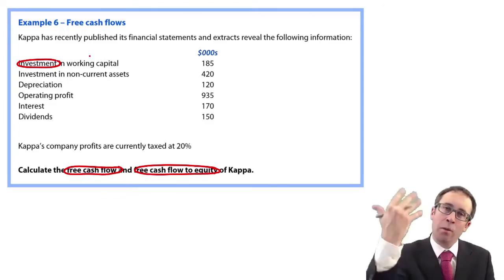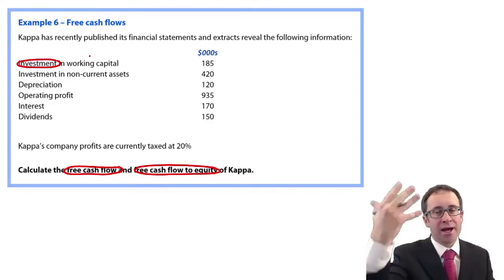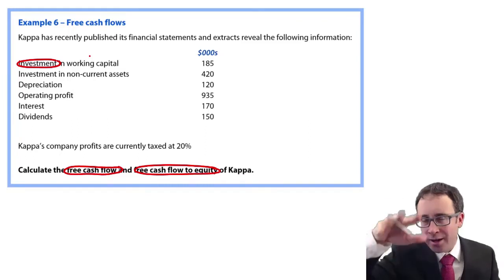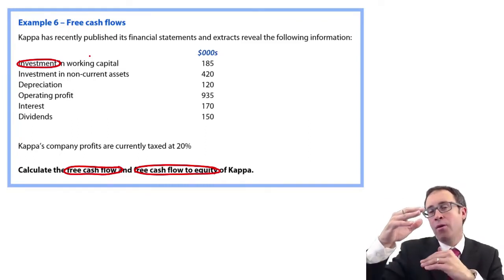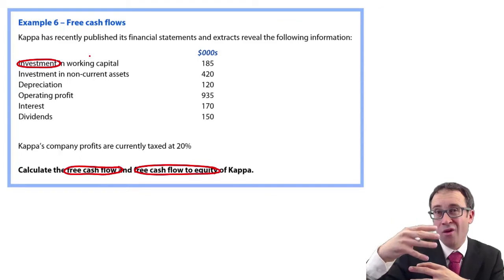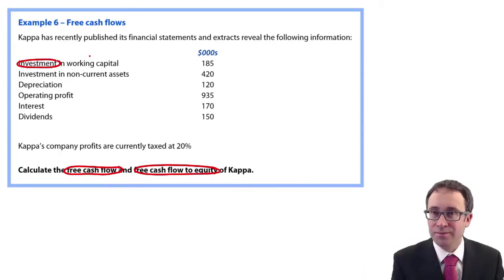So effectively, all we're doing is we're taking the operating activities from your cash flow statements, ignoring any interest payments, and then also adjusting for the investing activities.